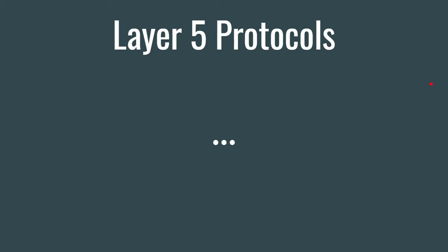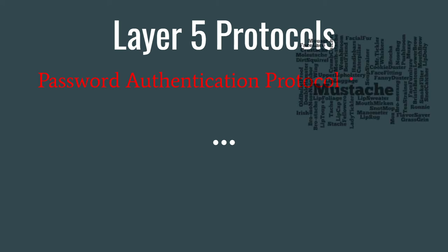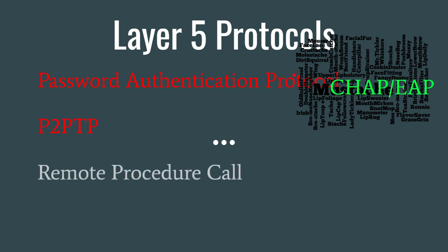Layer 5 protocols include Password Authentication Protocol, which sends information in plain text. The better option obviously being CHAP or EAP. We have Point-to-Point Tunneling Protocol, which is obsolete, and we have the Remote Procedure Call, which is basically a client talking to a server asking a server to do something.